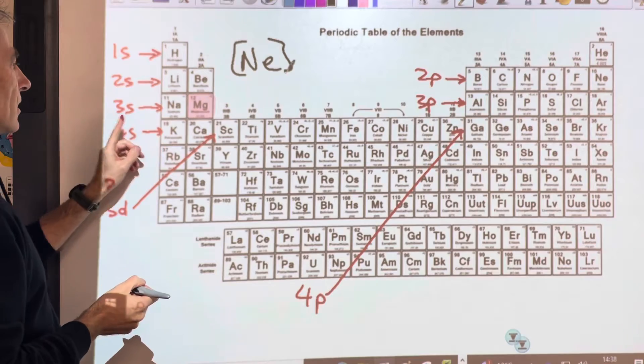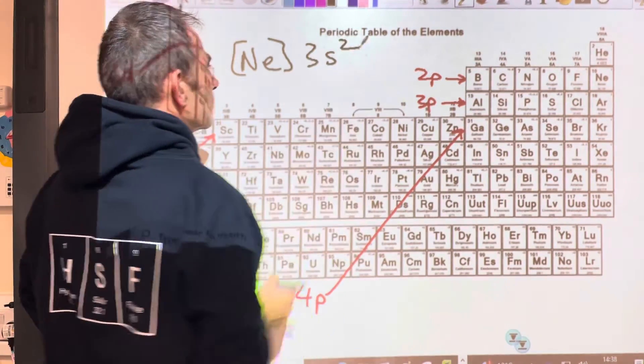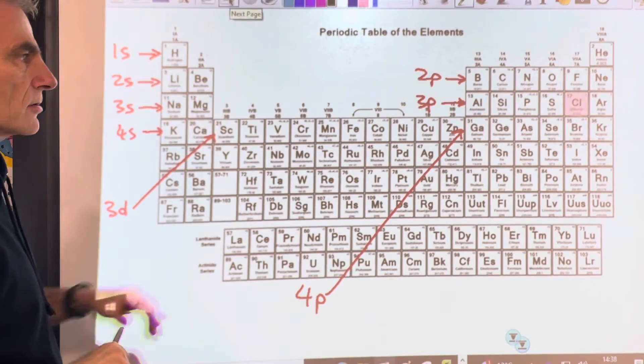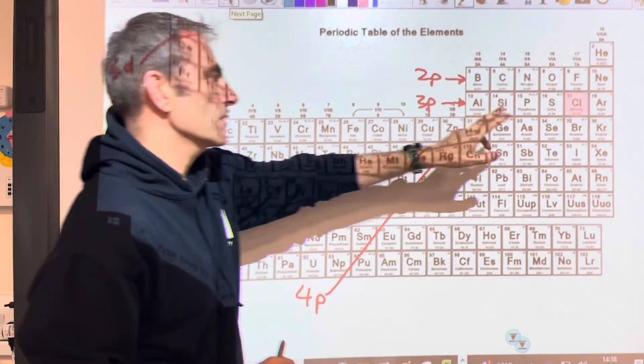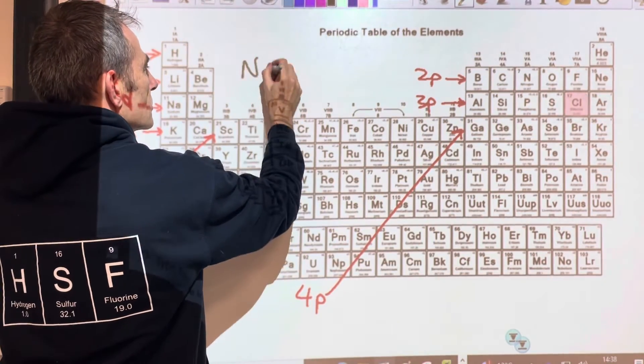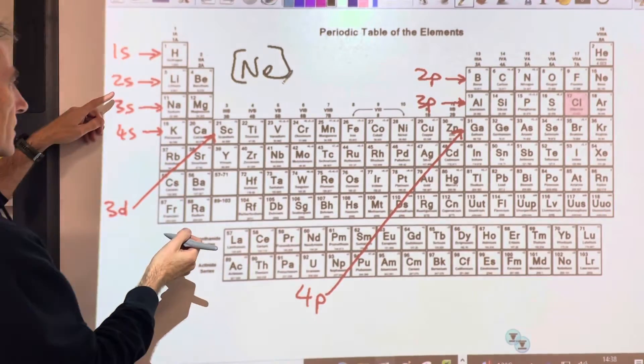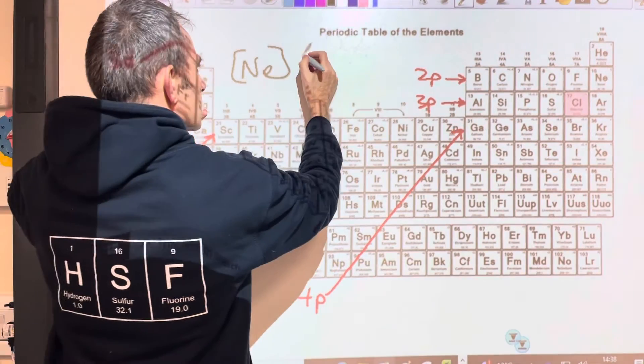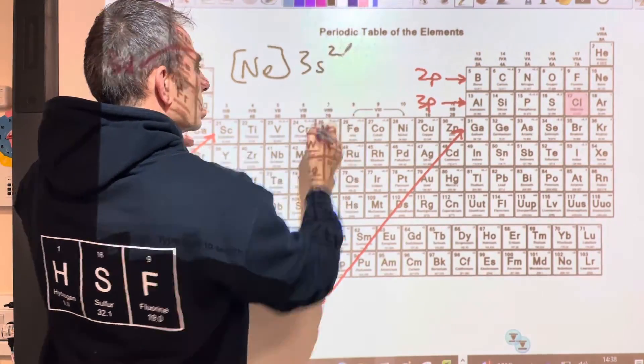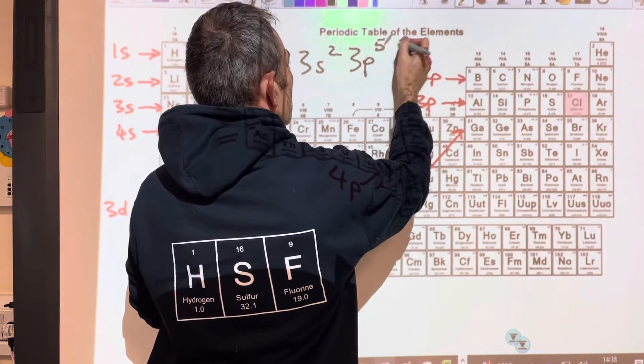Another one - so chlorine. So again, it's neon, it comes before, it's the noble gas before. So Ne in square brackets, and then what have we got after neon? We've got 3s², so it's going to be 3s² 3p one, two, three, four, five - 3p⁵.